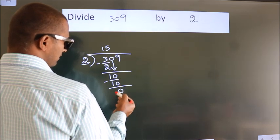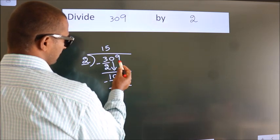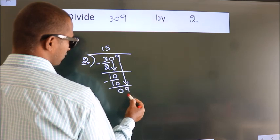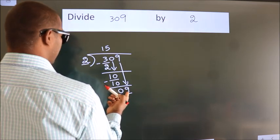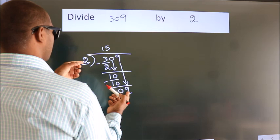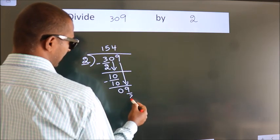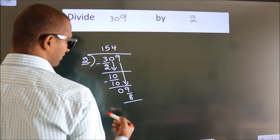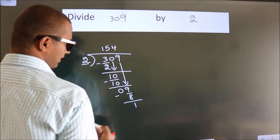After this, bring down the beside number. So, 9 comes down, giving us 9. A number close to 9 in the 2 times table is 2 fours, which is 8. Now we subtract. We get 1.